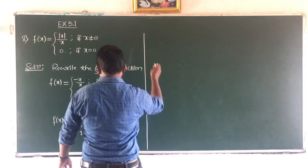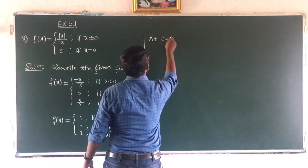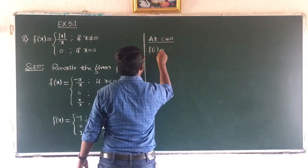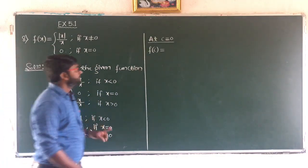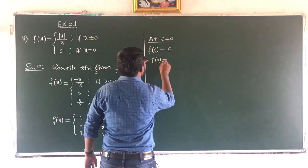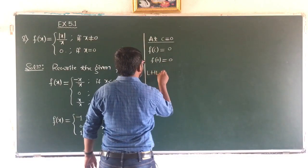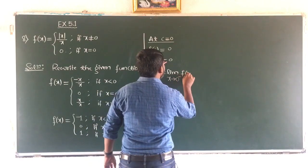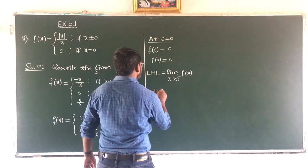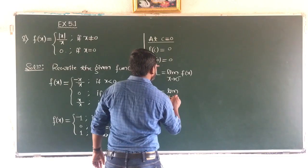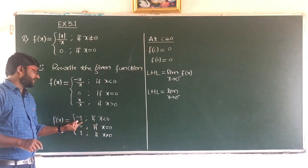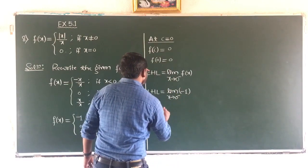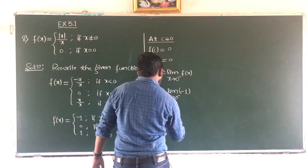At c equal to 0, f(c) equals f(0) which is 0. For the left hand limit, LHL equals limit as x tends to 0 minus of f(x). Since 0 minus means less than 0, the function is minus 1. The limit of a constant is the constant itself, so LHL equals minus 1.